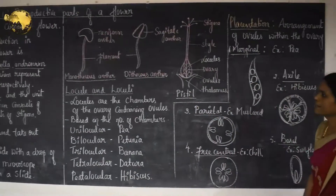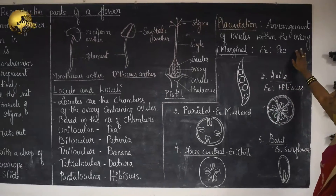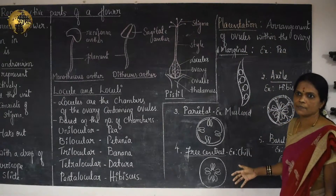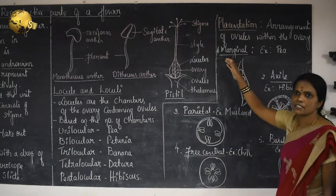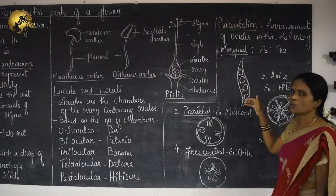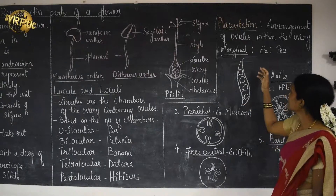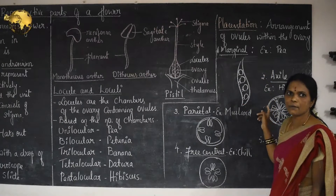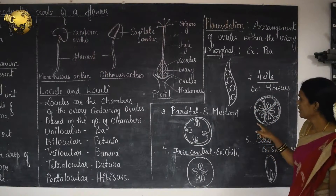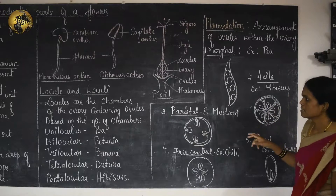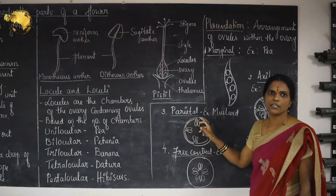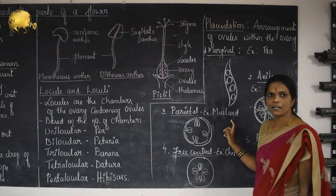If you observe the arrangement of ovules within the ovary, that is called placentation, and it can be of various types. In marginal placentation, the placenta bearing the ovules arises in rows on the margin — example: Pea. In axile placentation, the placenta bearing the ovules arises from the center of the ovary — example: Hibiscus. In parietal placentation, the placenta bearing ovules arises on the inner wall of the ovary — example: Mustard.